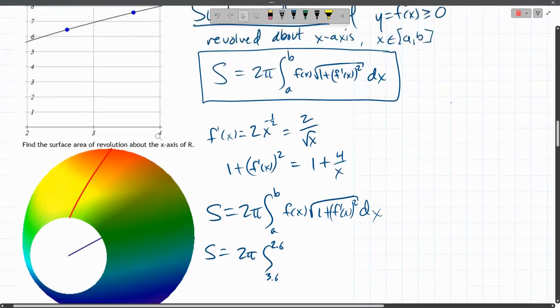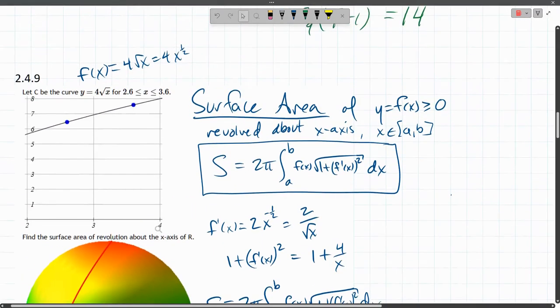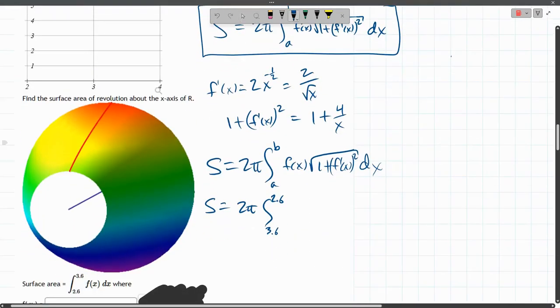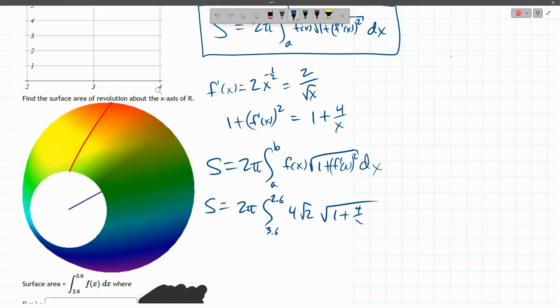All right, f of x is at the top here, 4x to the one half or 4 square root x. And now copy down the one plus f prime squared. It's going inside the square root. Oh, it should be an x inside that little square root, not a 2.